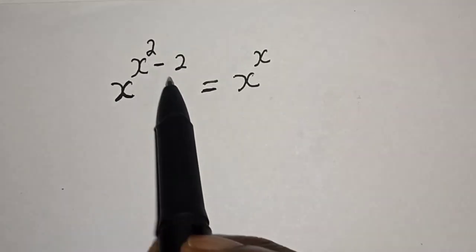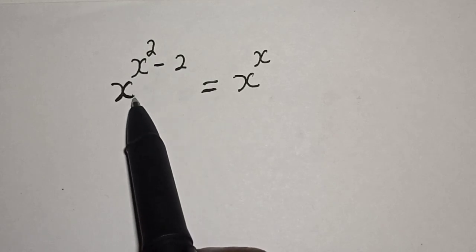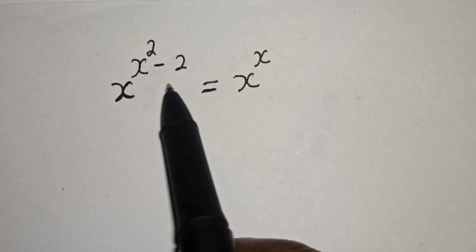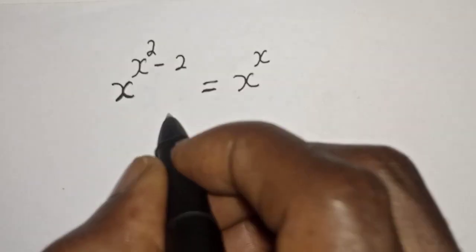x raised to power x squared minus 2 is equal to x raised to power x. Hi everyone, welcome to my class. In this class we want to find the value of x from this nice equation. But before we proceed, please don't forget to like, share, comment and subscribe.